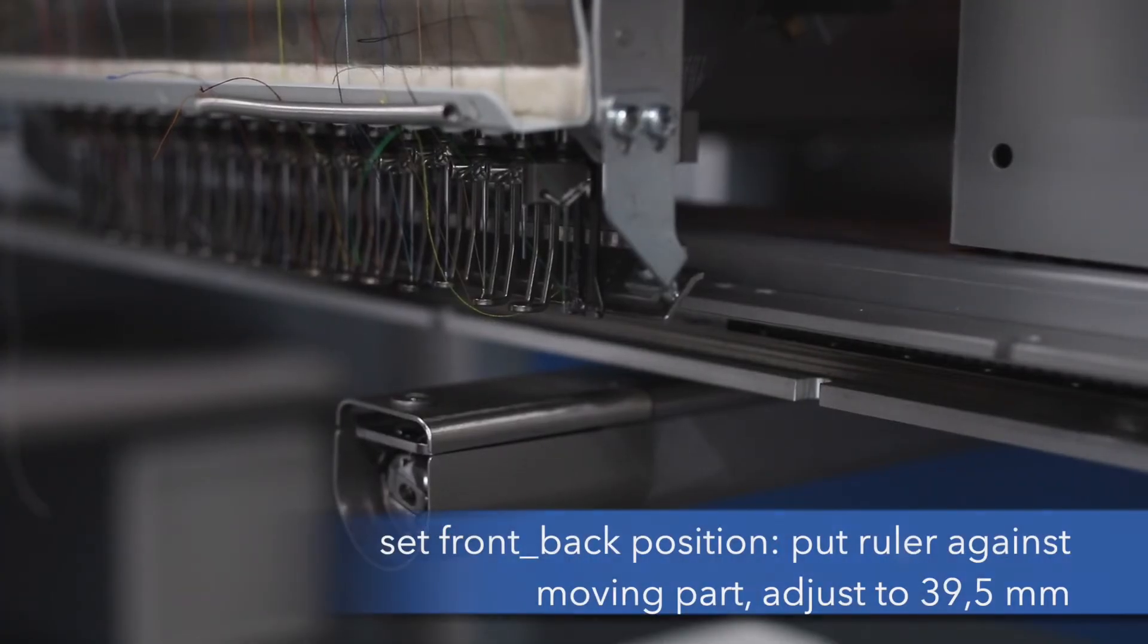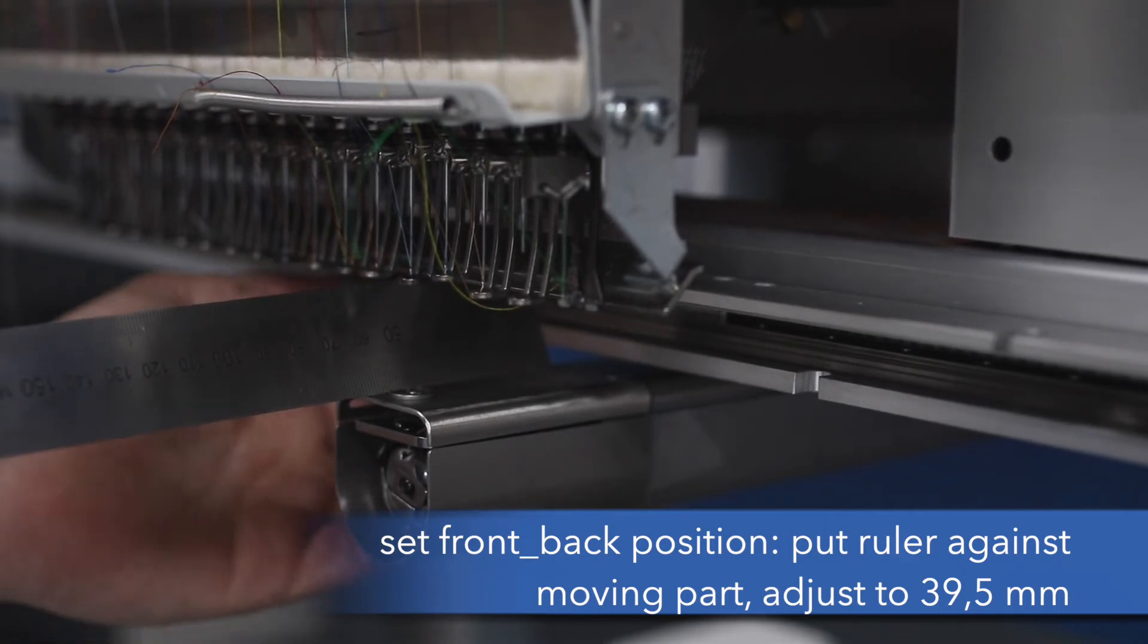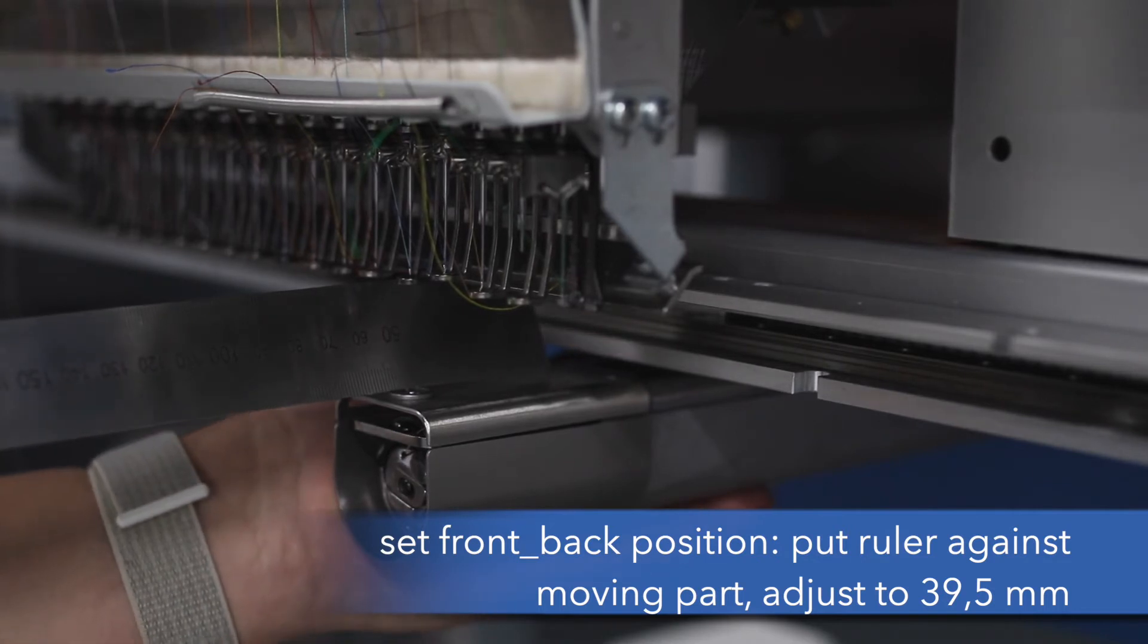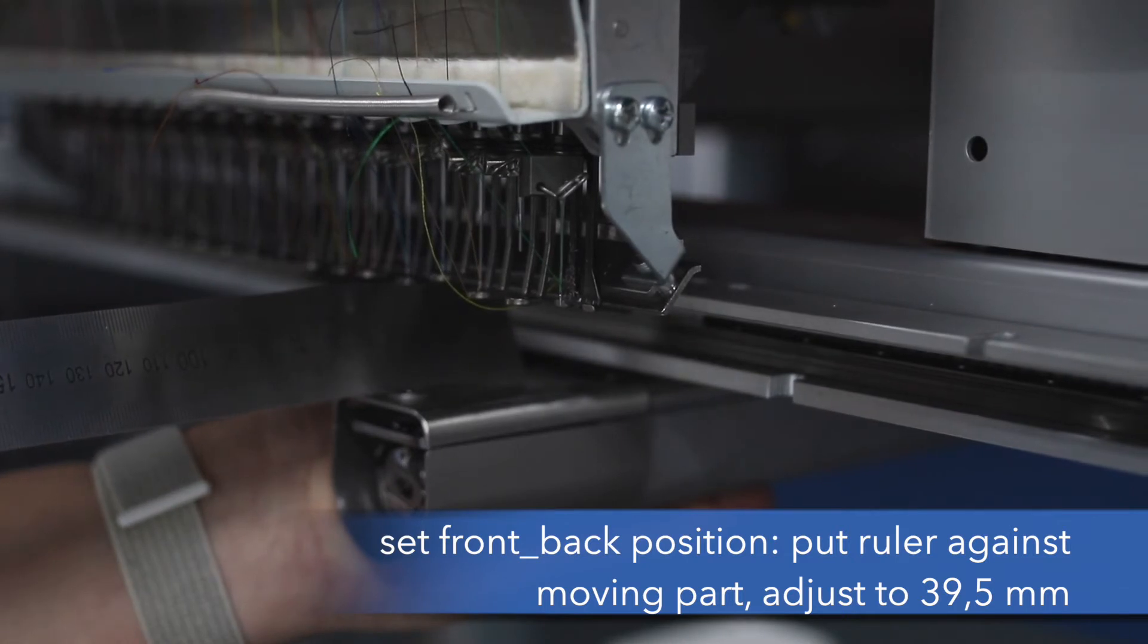First we have to set the front back position. Therefore we use a ruler that we are pressing against the moving part for left and right, and this has to be 39.5. Then we move the Y bar forward until we have the 39.5 to the stitch hole.